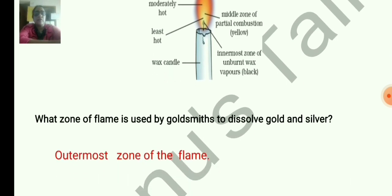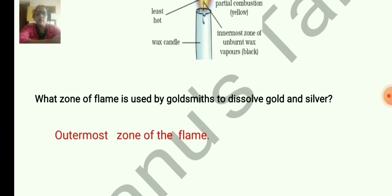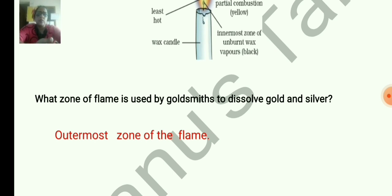What zone of the flame is used by goldsmiths to dissolve gold and silver? The outermost zone of the flame is used by goldsmiths because it is the hottest part and it is used for the purpose of melting metals.